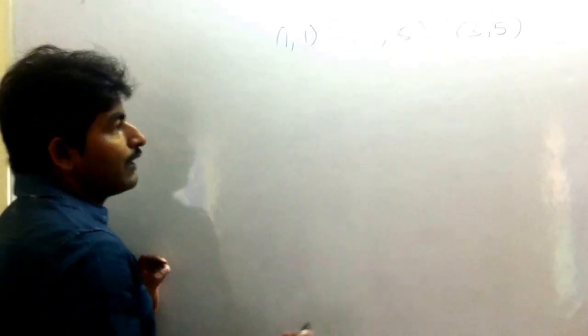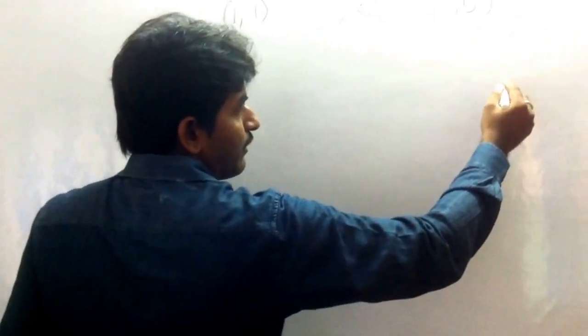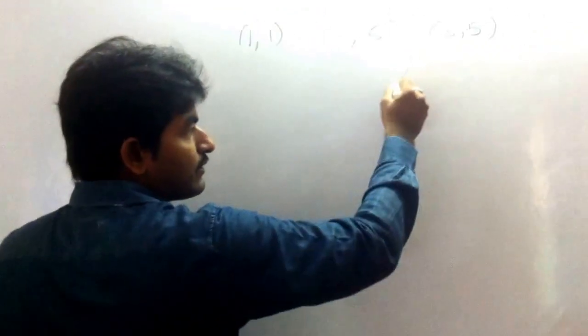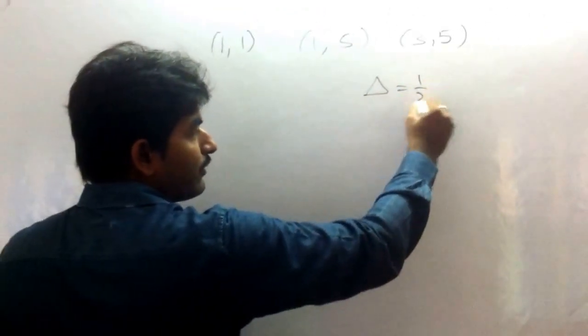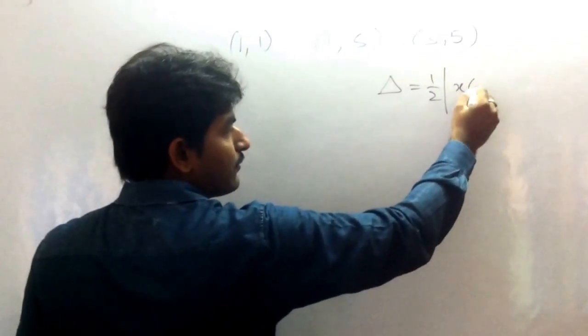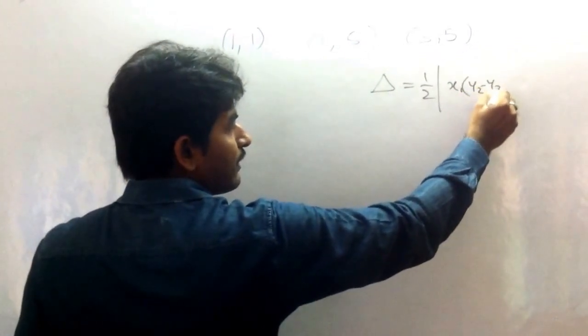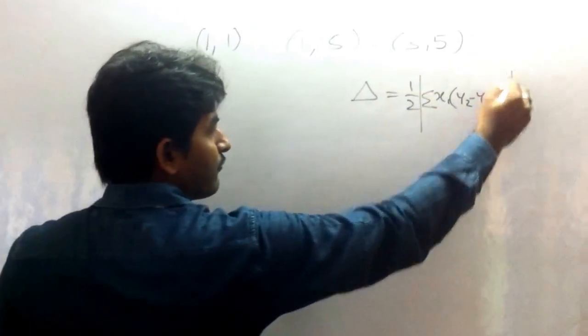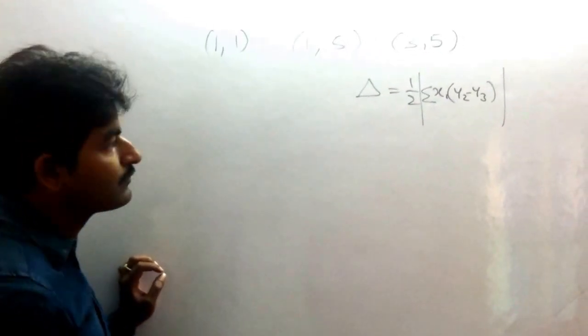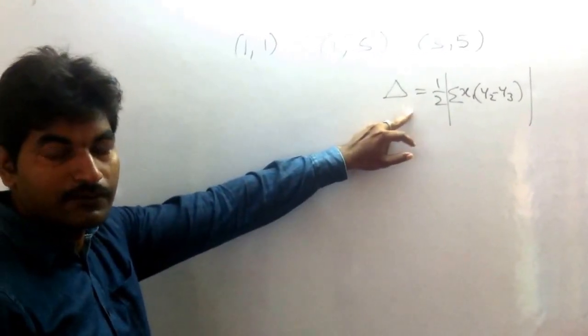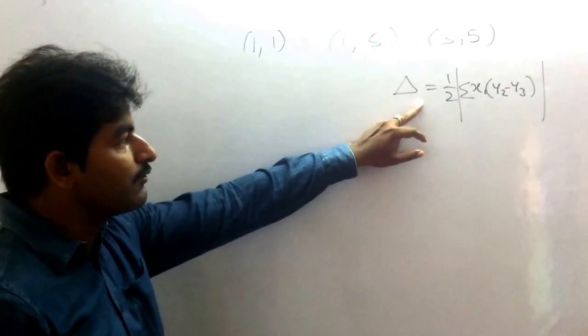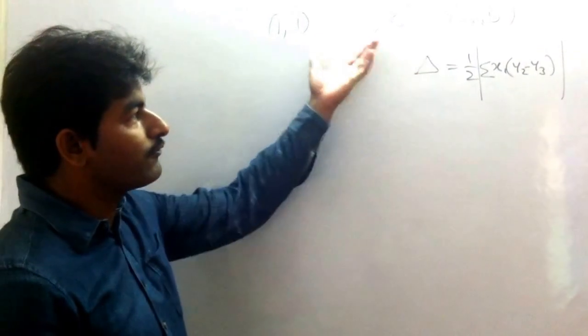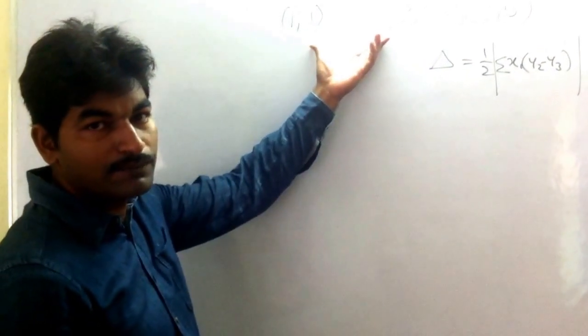Actually, we have a formula for finding area of a triangle, which states that Δ = ½|Σ(x₁·y₂ - y₃)|. I am directly taking sigma. You can expand that. This is a result we all know. But without using this formula, we are going to find the area of this triangle with these vertices.